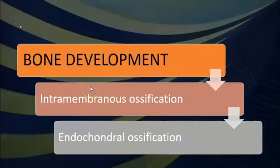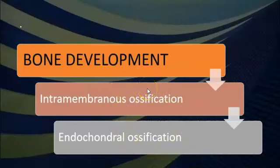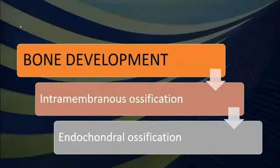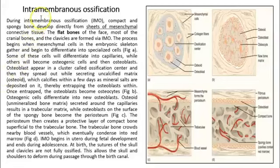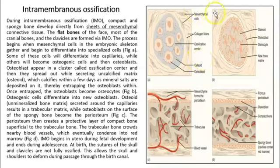The next topic is bone development. Bones develop through a process called ossification, which is the deposit of calcium in the bones. There are two main types: intramembranous ossification and endochondral ossification. Intramembranous ossification starts from a membrane and is found in flat bones. It proceeds through stages: osteoid tissue forms in mesenchymal tissue, followed by ossification of the osteoid tissue, eventually giving spongy bone.